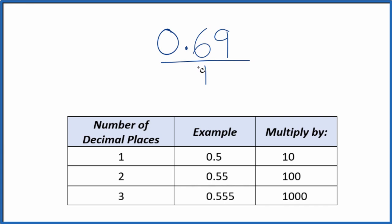What we need to do is get 0.69 to be a whole number. I can see there are two decimal places. With two decimal places, we're going to multiply by 100, and that'll give us our whole number.